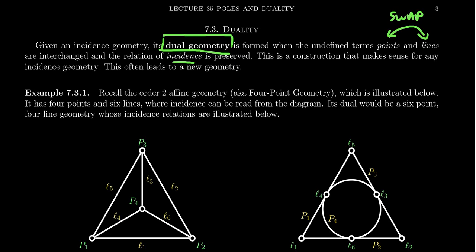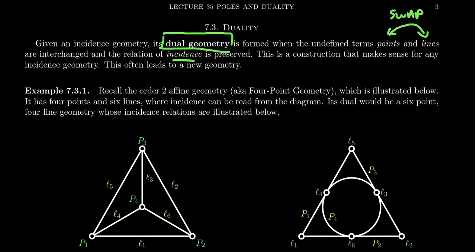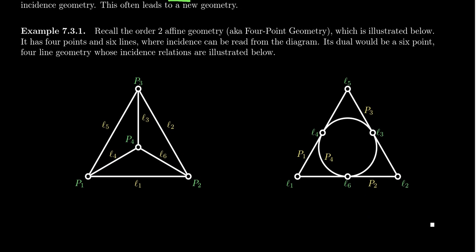This construction works whenever we have points and lines, such as in an incidence geometry, and it typically creates a new geometry of some kind. I wanted to consider the four-point geometry — the so-called order-two affine geometry we referred to earlier this semester. In this geometry, we had four points, P1, P2, P3, P4, and by line determination there were six lines: L1 through L6, with two points per line.